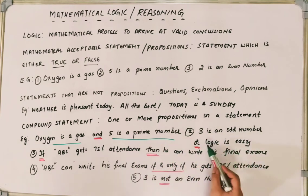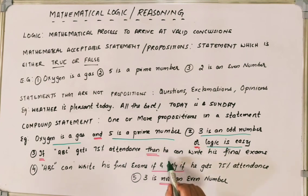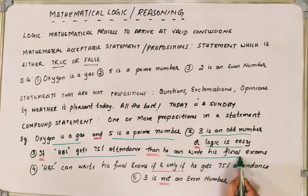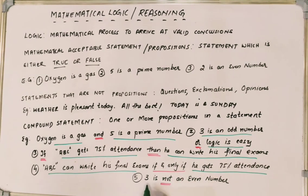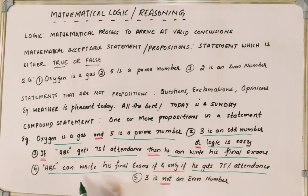Similarly, 'three is an odd number OR logic is easy' — both are connected with OR. 'If ABC gets 75% attendance, then E can write the final exams' — here 'if' and 'then' connect two statements. Another example: 'ABC can write the final exams if and only if E gets 75% attendance' — connected with 'if and only if'. 'Three is NOT an even number' represents negation. So there are five logical connectives: AND, OR, IF-THEN, IF AND ONLY IF, and NOT.